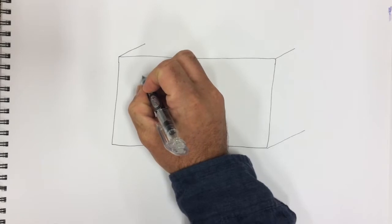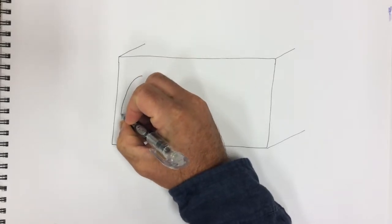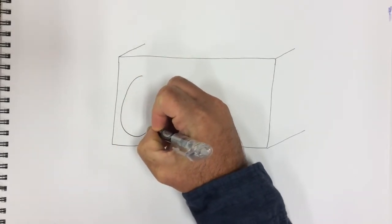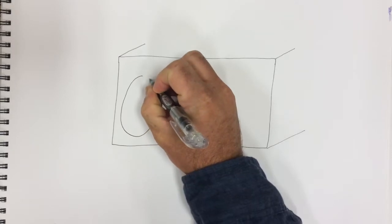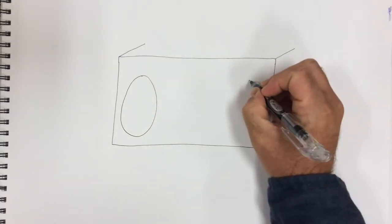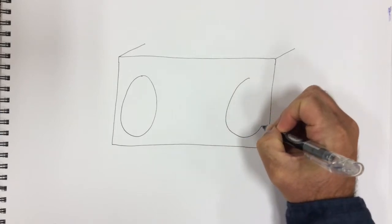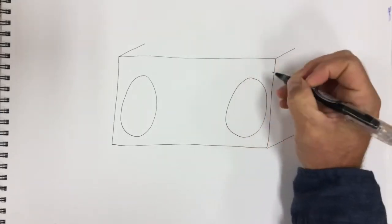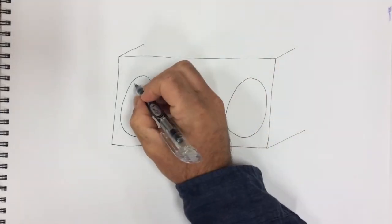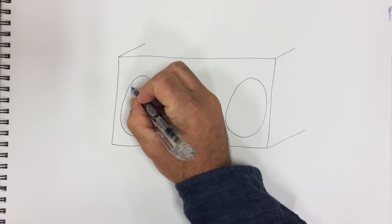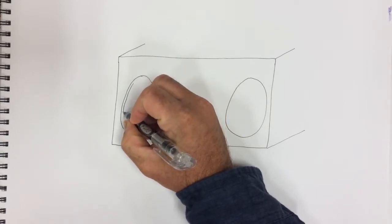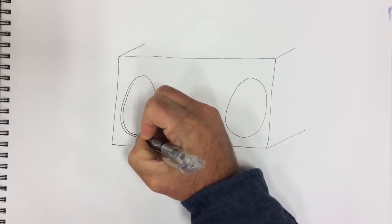Next we'll do an egg shape on either side of that first rectangle. Make sure it's pretty big. You can call it an egg shape or it's actually called an ellipse. Draw another one. Then we're gonna double it up. These are gonna be the speakers of our boombox.